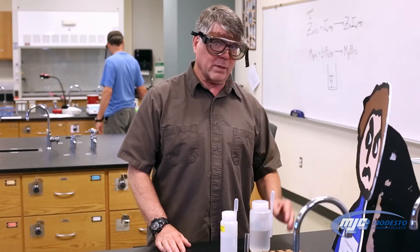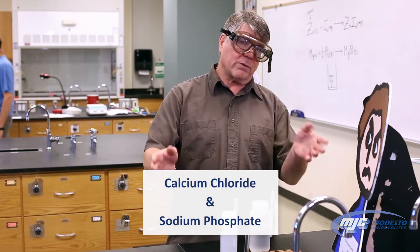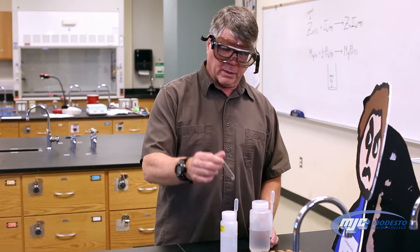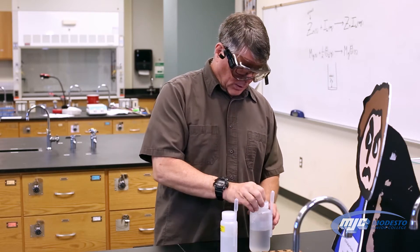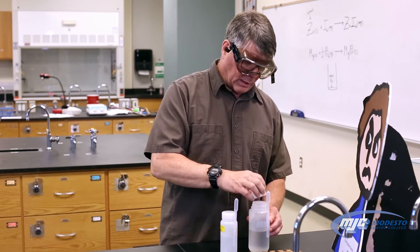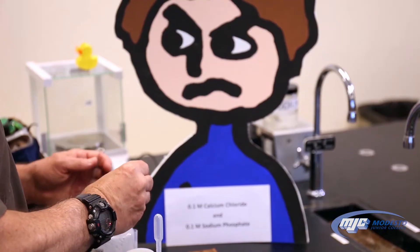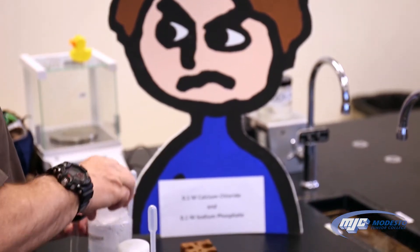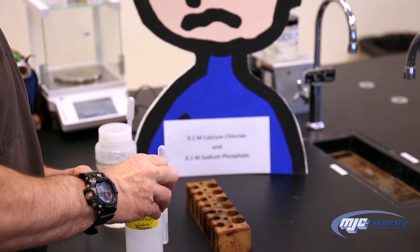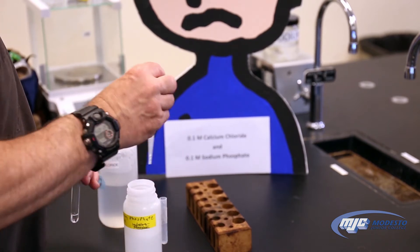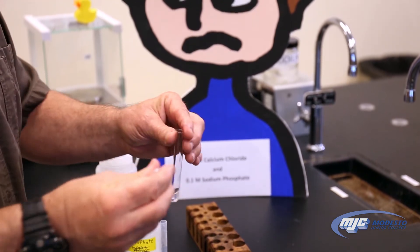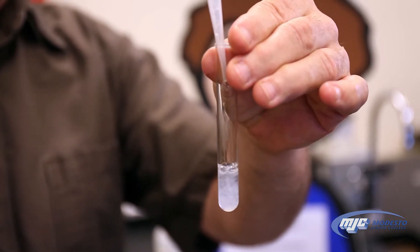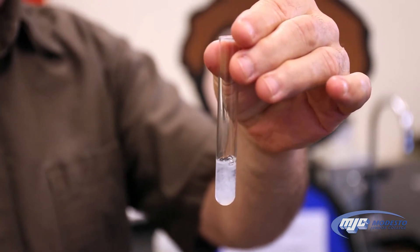This is the reaction, if any, between calcium chloride and sodium phosphate. With all these reactions, we're not going to measure anything — these are all qualitative, so we're just going to put a little bit of each in. I'll take an empty small test tube, add some calcium chloride, just a little bit. Always put the lids back on containers.